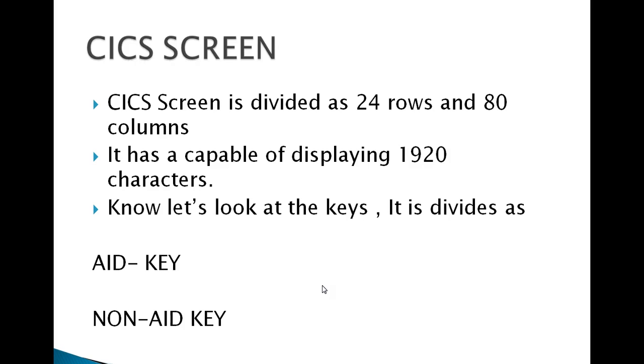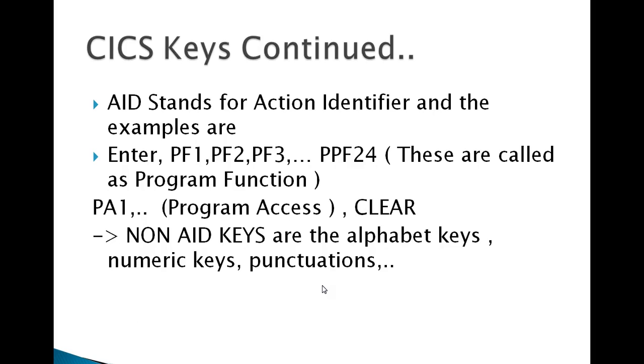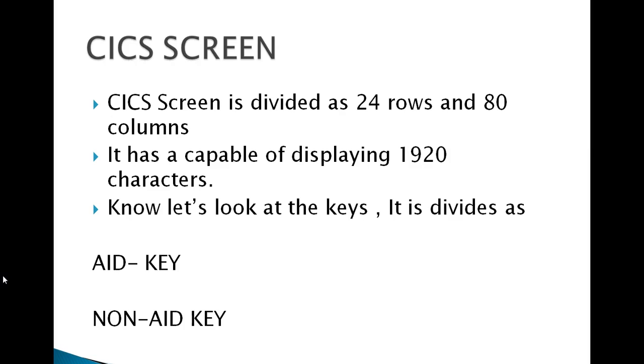Just to recap: CICS screen is divided as 24 rows and 80 columns, it is capable of displaying 1920 characters. The keys are divided as Action Identifier keys and non-Action Identifier keys. The examples of Action Identifier keys are PF1, PF2, Enter, and so on. For non-Action Identifier keys: alphabet keys, numeric keys, and punctuation.